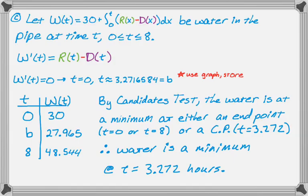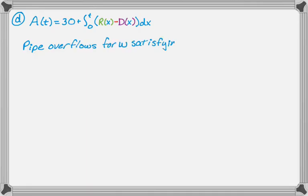So the next part, I'm going to get in trouble because I named my function W of T. So I'm just going to rename the function and write it down. So I rename the function A of T, 30 plus the integral from zero to T of rate in minus rate out. And the problem is telling me that the pipe will overflow if there are 50 cubic feet. Well, it holds 50 cubic feet. So what I want to do is say that the pipe overflows for some W satisfying A of W equals 50. And I'm pretty sure that actually solves the problem.